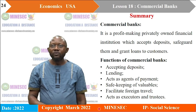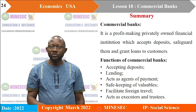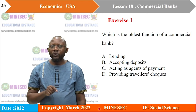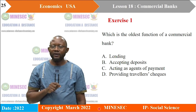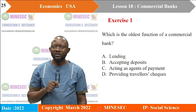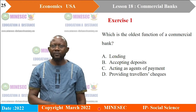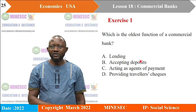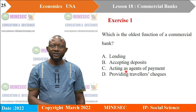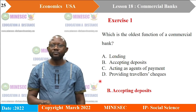Application exercise 1: Which is the oldest function of a commercial bank? A. Lending. B. Accepting deposits. C. Acting as agents of payment. D. Providing travellers' cheques. Lending is the most profitable function, but accepting deposits is the oldest. The correct answer is B.